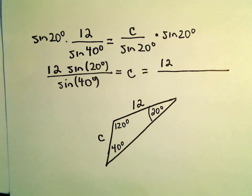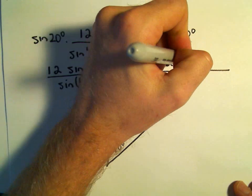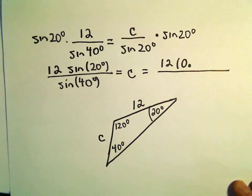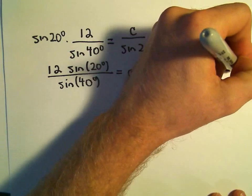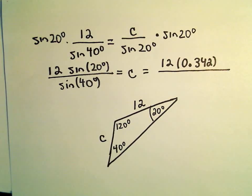Alright, so let's do sine of 20 degrees. I'm going to round at three decimal places. So that's 0.342.